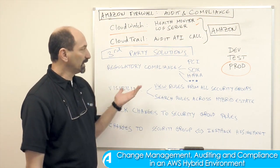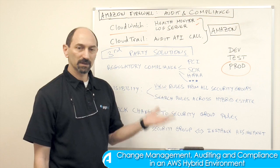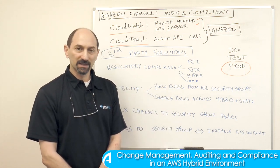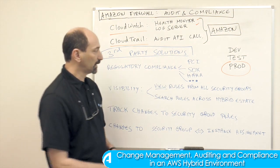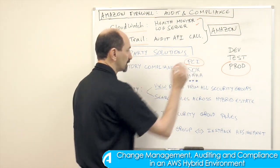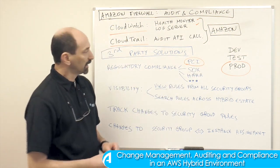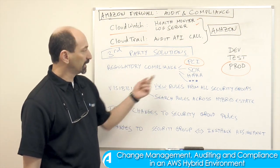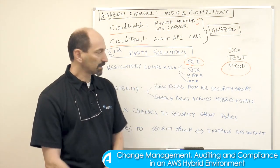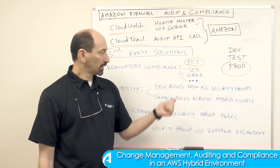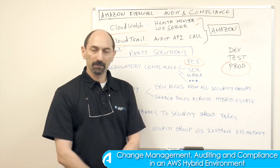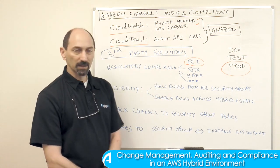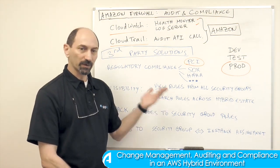So why do you need that? Well, if your servers in the Amazon estate are processing any kind of sensitive data — for instance, if you're processing credit cards, you're subject to PCI. If you are a publicly traded company, then you're probably subject to SOX. If you're managing medical data using those servers, you're probably subject to HIPAA and so on and so forth.